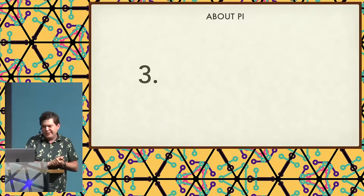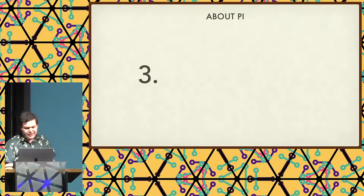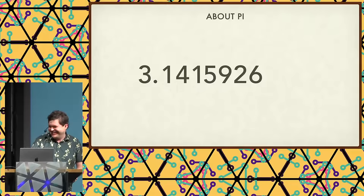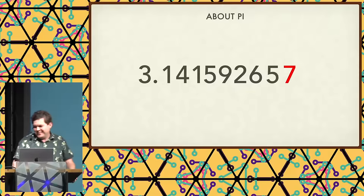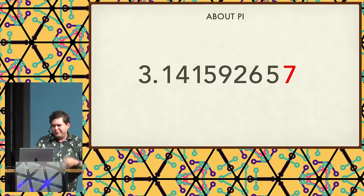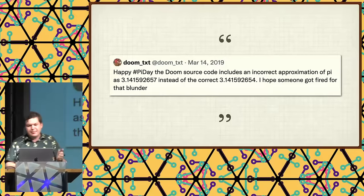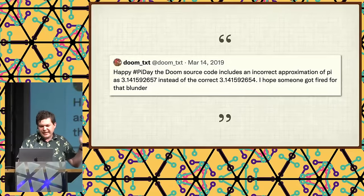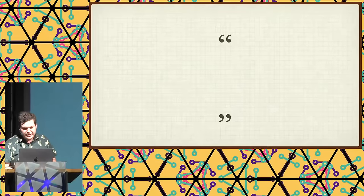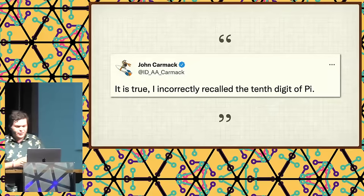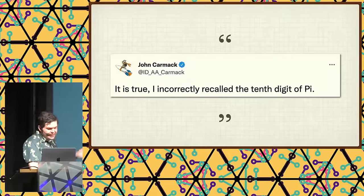Pi — we all know pi, the ratio of the circumference to the diameter of a circle. Some crowd interaction here: the original game was compiled with seven as the tenth digit rather than the correct four. One person said "Happy Pi Day" — the source code includes an incorrect approximation of pi. John himself admitted he incorrectly recalled the tenth digit of pi. John, I think we forgive you for this mistake — it was not noticeable in the game and was left in the source incorrect.